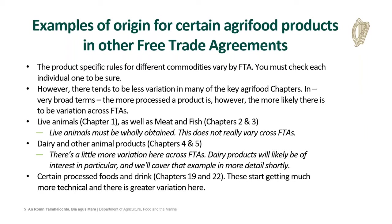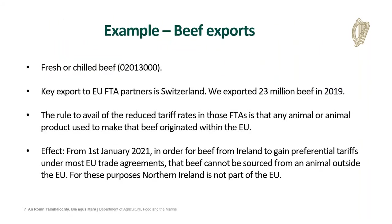Rules of origin are quite complicated, nuanced, and specific to product and FTA. For agri-food, there tends to be a little less variation in many of the key rules. Looking at chapters 1, 2, and 3 of the Combined Nomenclature — covering live animals, meat, and fish — there is very limited variation in the EU's FTAs. All these products must be wholly obtained from within the EU in order to avail of reduced tariff rates. You'll see this common approach in the EU's FTAs with Canada, Singapore, South Africa, and others. Chapters 4 and 5 tend to be broadly the same across FTAs but with a little more variation. Once you start looking at more processed goods, there is significantly more variation in the product-specific rule between FTAs — and that is particularly where you'll have to pay attention.